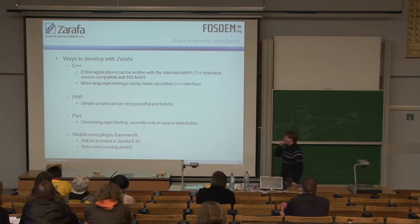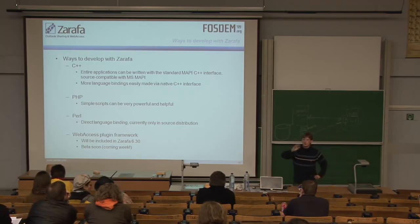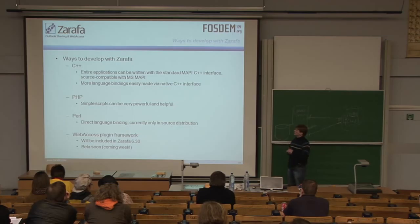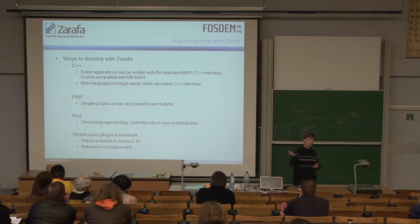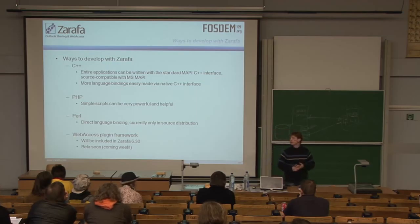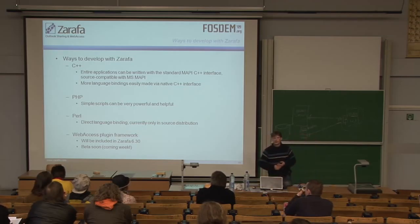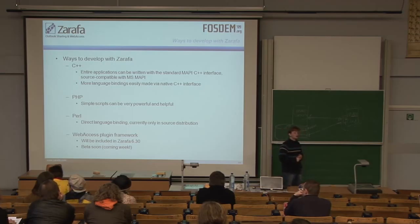Ways to develop with Zarafa, since this is a developer's conference. Obviously with C++ you can write entire applications — you could theoretically rewrite the entire Outlook UI, because that's all Outlook really is: a UI on the API. You can write that in C++ on Linux, and even run it on Windows because it's the same API — it's all source-compatible. For example, you could make a Qt application in C++ and have it cross-platform compiled on Linux and Windows. C++ also makes it easy to create language bindings with SWIG for any language you want.